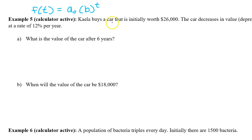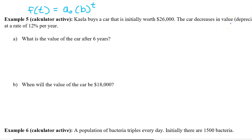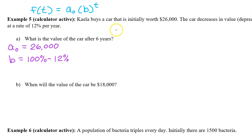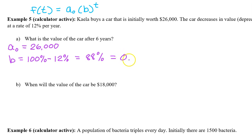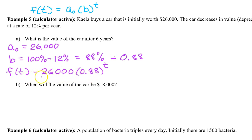Example 5: Kayla buys a car that is initially worth $26,000. The car decreases in value, or depreciates, at a rate of 12% each year. Exponential decay can be modeled by f of t equals a-zero times b to the t power, where a-zero is the initial value of $26,000, and b is the growth factor. We can find the growth factor by subtracting 100% minus the 12% annual depreciation. This is 88%, or as a decimal, 0.88. The value of Kayla's car can be modeled by f of t equals 26,000 times 0.88 to the t power.